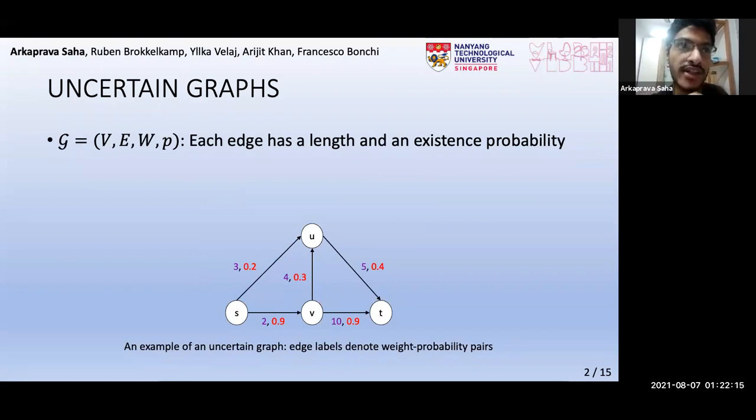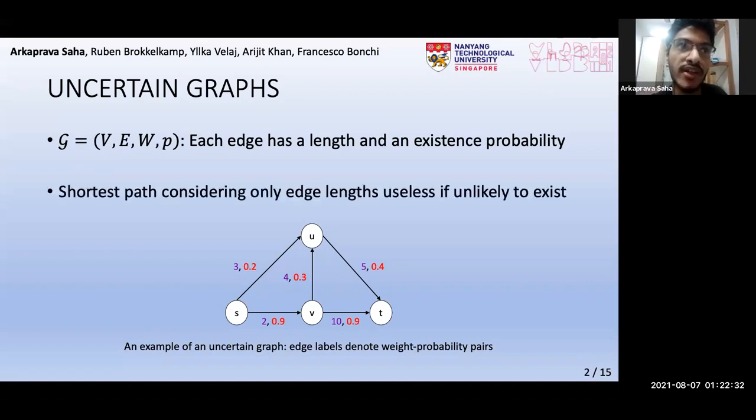This figure shows an example of such a graph. Now, we all know about shortest paths in deterministic graphs. If we were to extend this concept to uncertain graphs, one way is to use the shortest path considering only the edge lengths. However, such a path is useless if it is highly unlikely to exist. For instance, if such a path is used to transmit information from one computer to another in a network, then often the information will end up not reaching the destination at all.